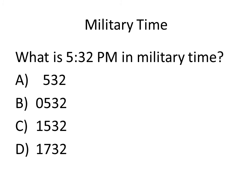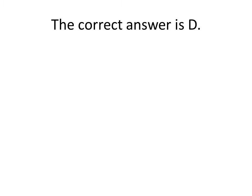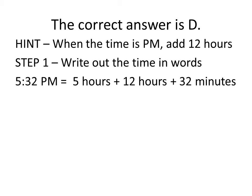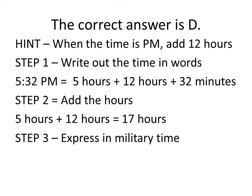You're also going to see problems on military time on the HESI exam. Take a few moments and try to work out the problem. The correct answer here is D. Remember that when the time is in PM, you need to add 12 hours. For our first step, write out the time in words: 5:32 PM is 5 hours plus 12 hours plus 32 minutes. Then add the hours together to get 17 hours. Finally, express that in military time: 17 hours and 32 minutes is 1732 military time.